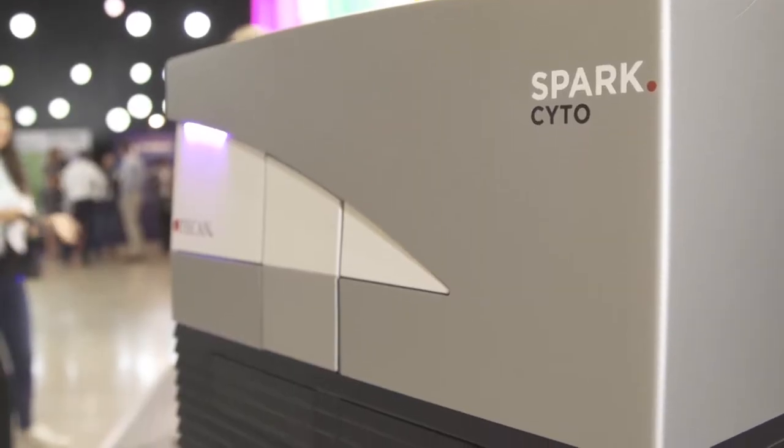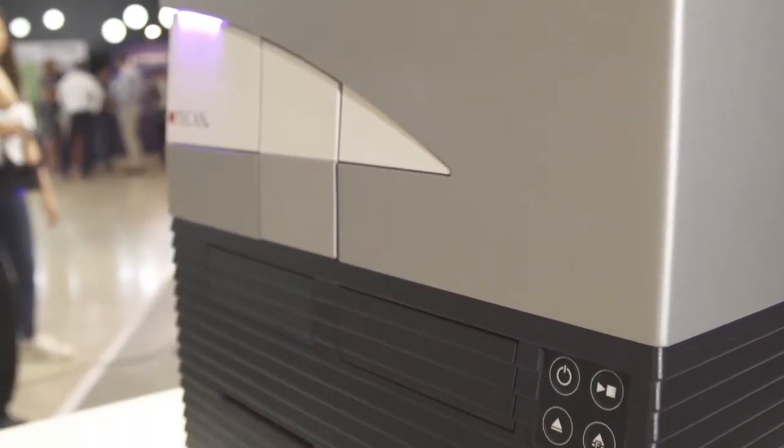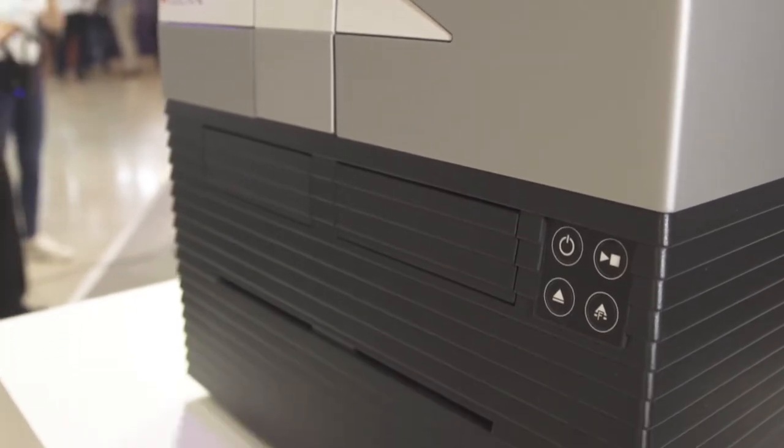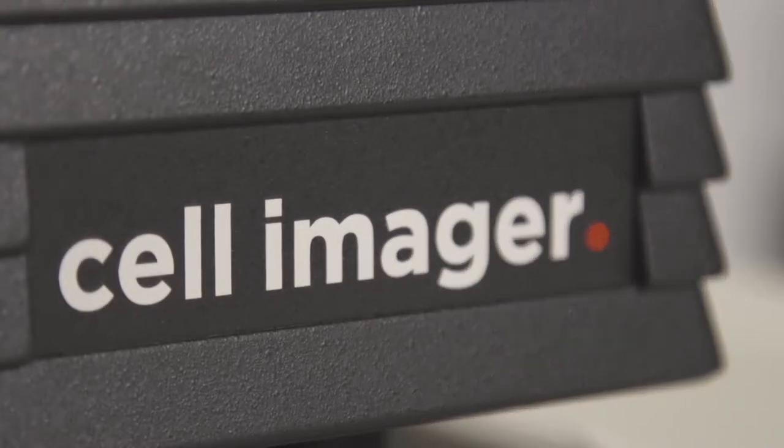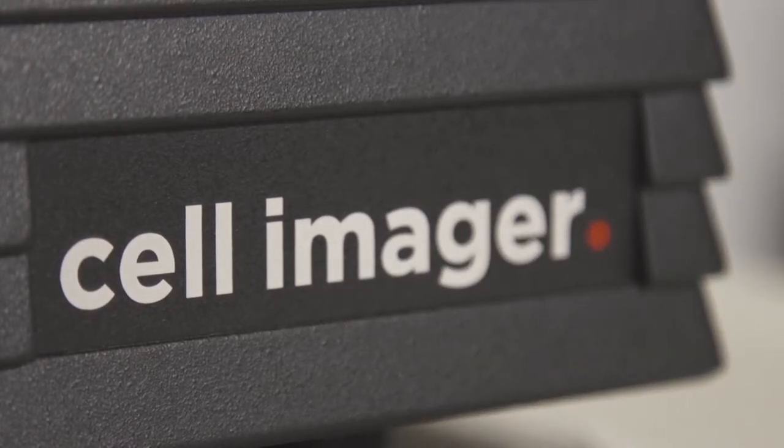The Spark CYTO was the first live cell imaging multi-mode reader with real-time analysis. It has three objectives 2x, 4x and 10x and four fluorescent channels as well as bright field and digital phase contrast.